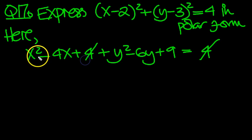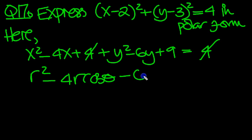The 4s cancel. We know x² + y² can be replaced by r², the x itself can be replaced by r cos θ, and then the y (minus 6y) can be replaced by r sin θ. So that equals r² - 4r cos θ - 6r sin θ + 9.